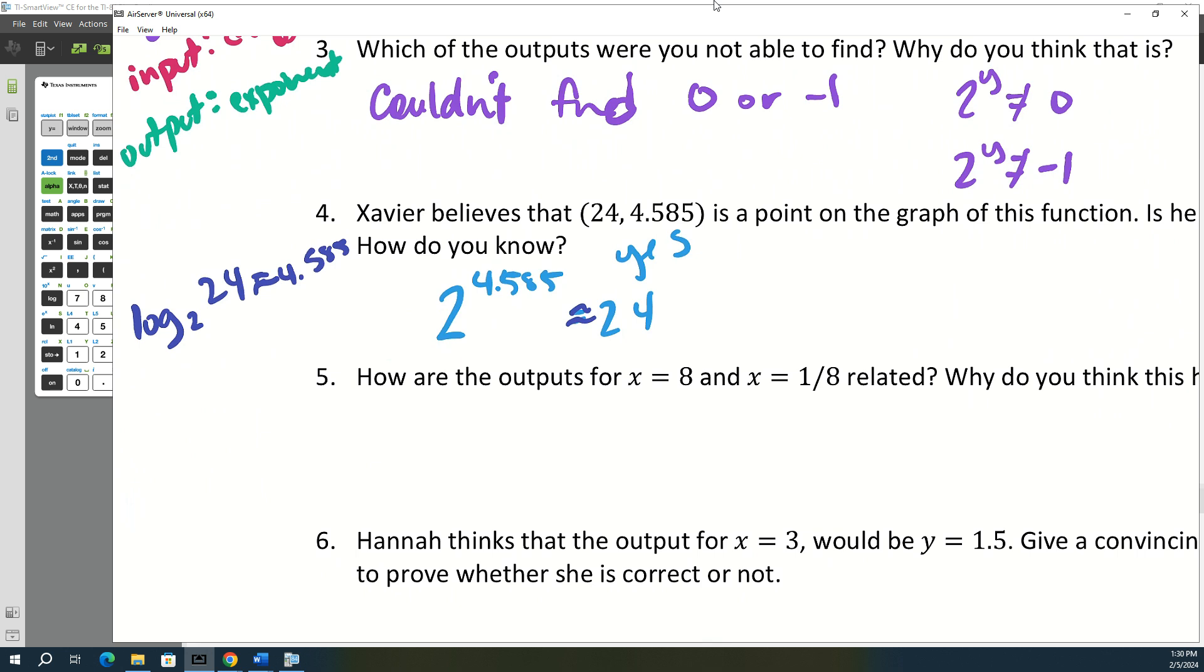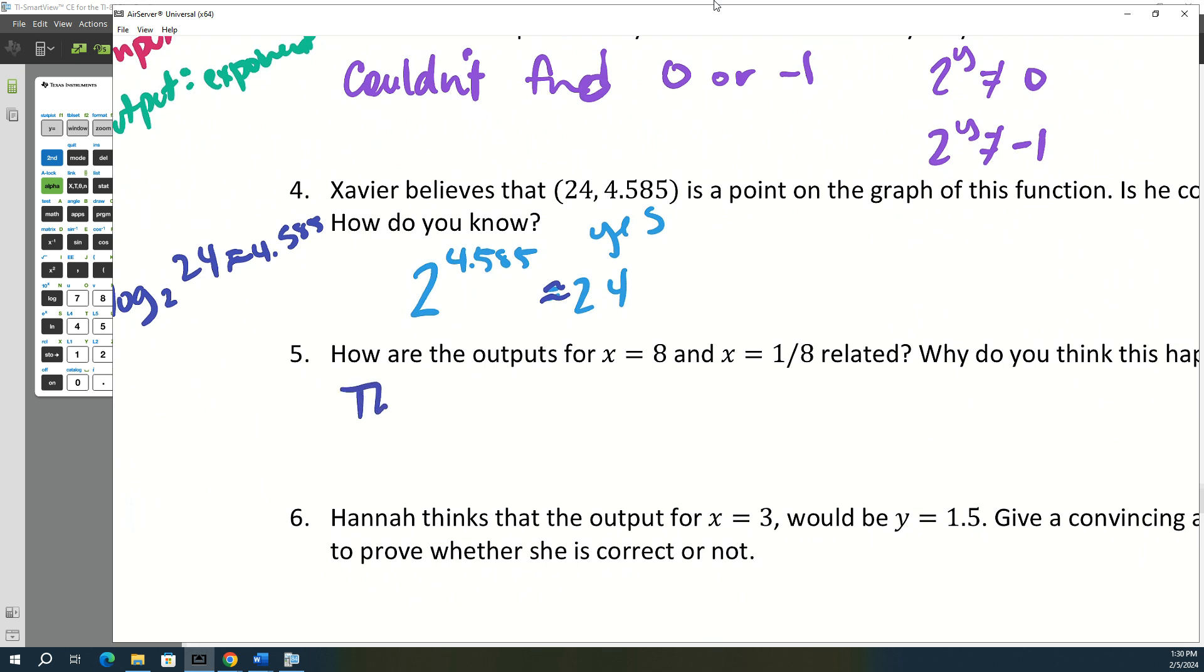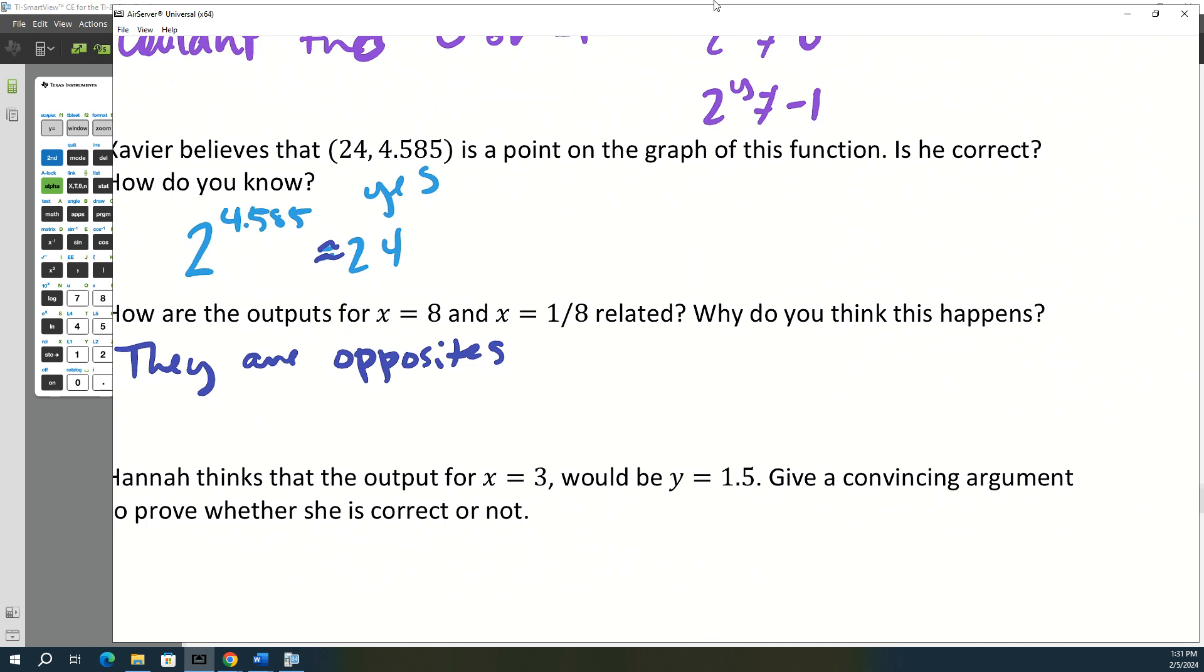Okay, and then five. How are the outputs for 8 and 1/8 related? Well, they're opposites. And the reason why, and we kind of talked about this earlier, 2 to the negative 3 is the same as 1 over 2 to the positive 3. So that negative exponent makes it a fraction.